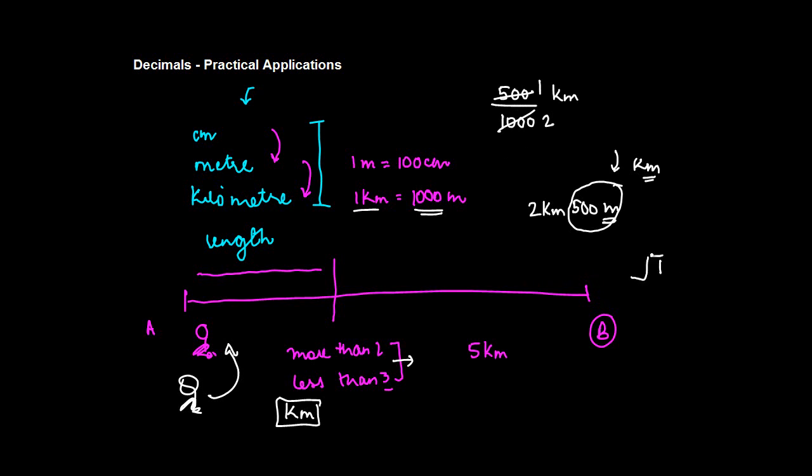If I divide 1 by 2, one will not go into two, so I put in a decimal point: 0.5. So 1/2 equals 0.5 kilometers. You can say, 'I have come 2.5 kilometers.'